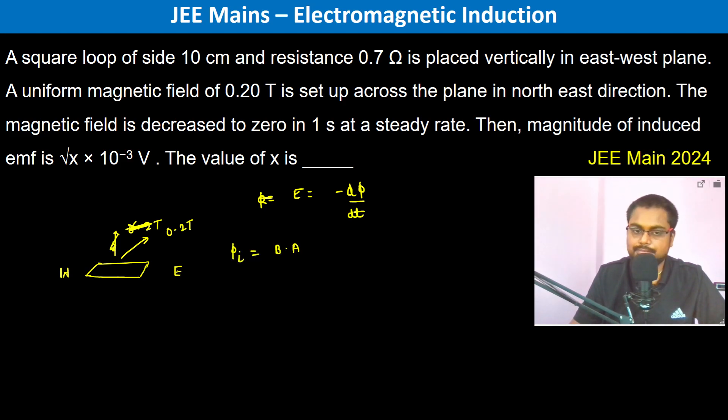Therefore it's going to be, B was 0.2 into A. A is area, that is 10 centimeters, 100 centimeter square, so 100 into 10 to the power minus 4 meter square, into, the angle between them is 45 degrees, so cos 45 is 1 by root 2.